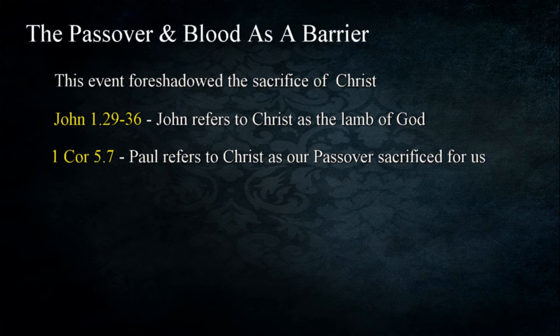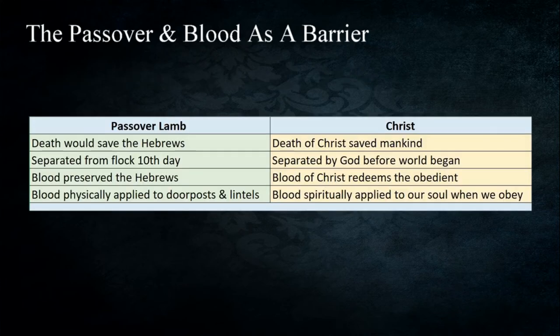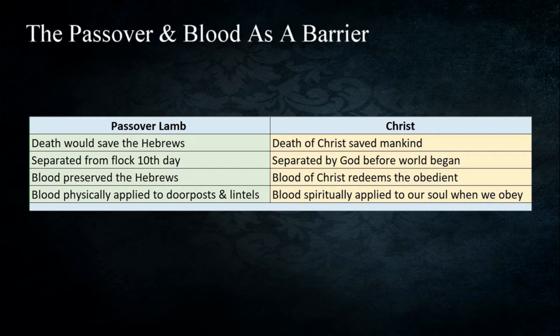The firstborn of Egypt would die, but the Hebrews would be saved by the blood of the lamb. This was a physical event that not only brought about the deliverance of the Hebrews but also foreshadowed the sacrifice of Christ. John the Baptizer refers to Jesus as 'the Lamb of God' in John 1:29 and 36, and Paul refers to Christ as 'our passover who's been sacrificed for us' in 1 Corinthians 5:7. The death of the passover lamb was to save the Hebrews; the death of Christ was to save mankind. The passover lamb was separated on the tenth day; Christ was sanctified as the sacrifice of God before the world began. The blood of the passover lamb preserved the firstborn; the blood of Christ redeems the obedient from death.